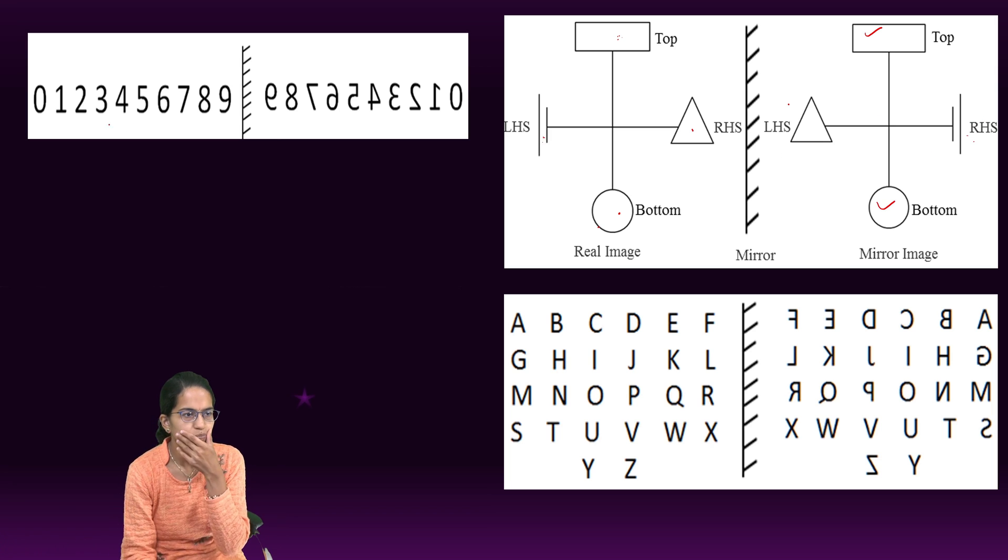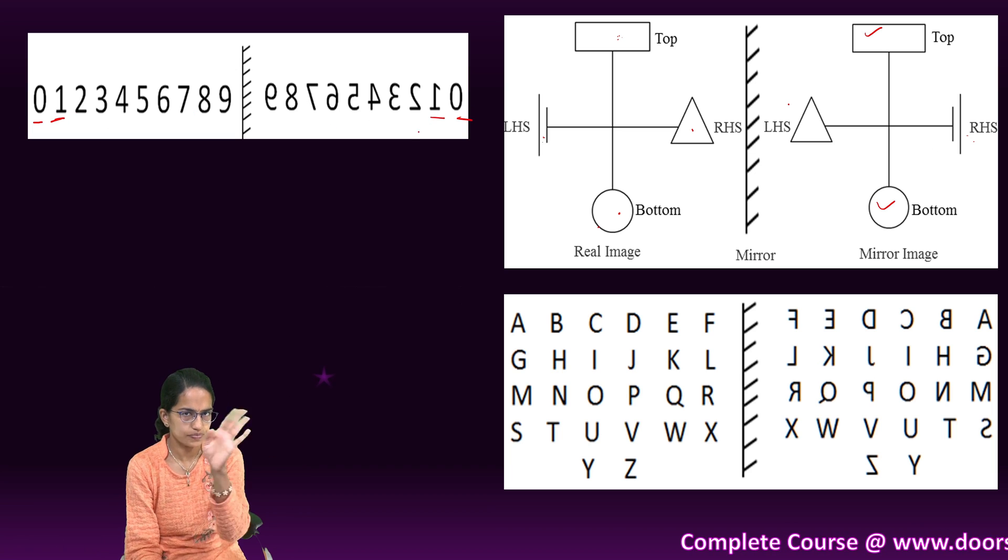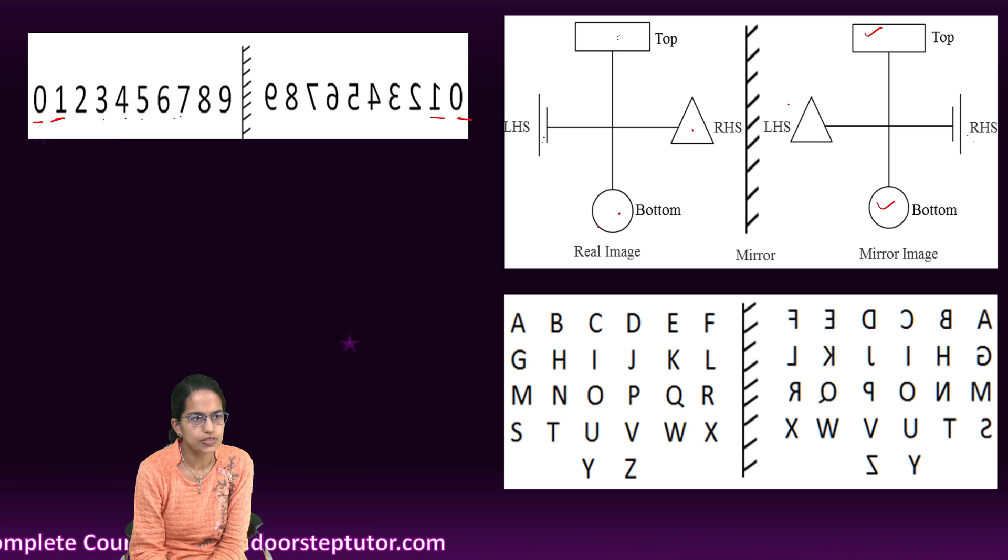Similarly 0 remains 0, 1 as I already mentioned would be left to right turned, 2 would be turned, similarly 3, 4, 5, 6, 7 and 9 would be turned.